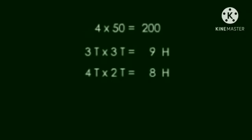4T into 2T. First we will multiply 4 into 2, that is 8, and T into T, that is H. So the answer is 8H, which means 800.